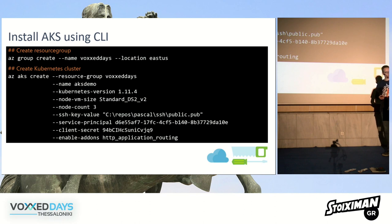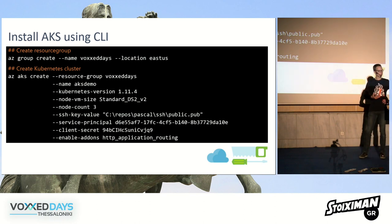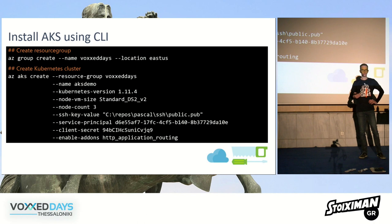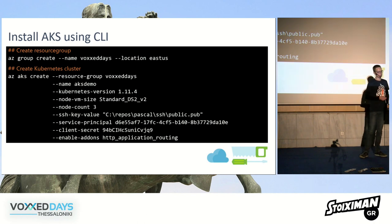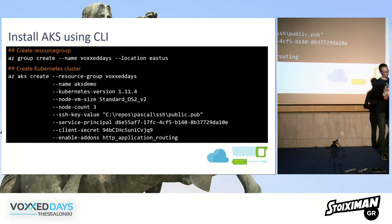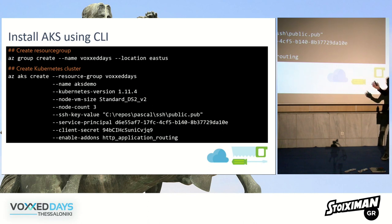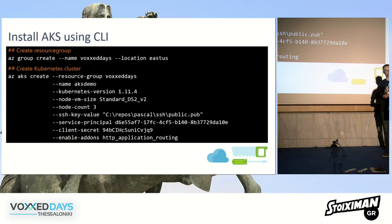In Azure you have a resource group, and inside it you can create a Kubernetes container cluster. You specify the version you want, the number of worker nodes, and the VM size.